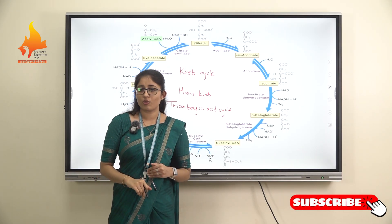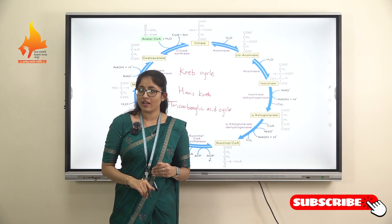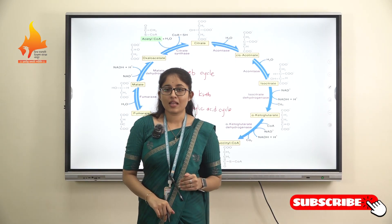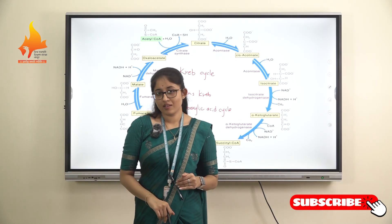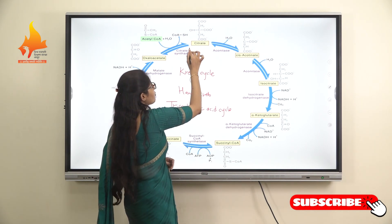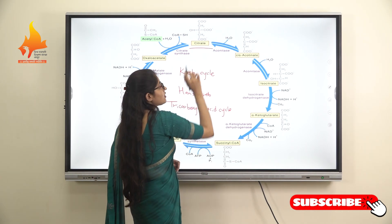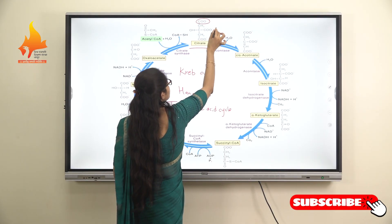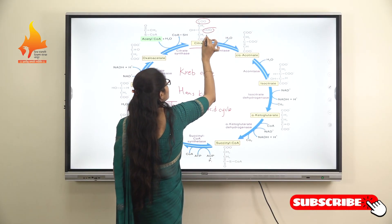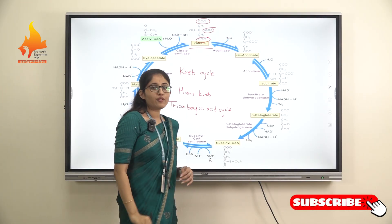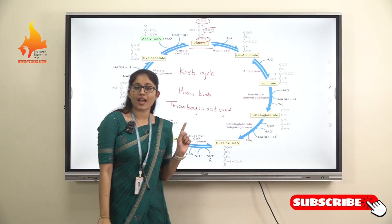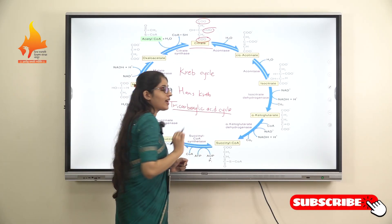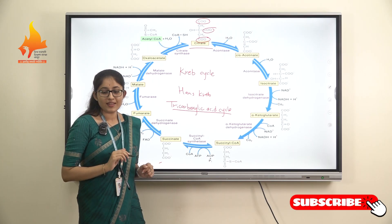Why is it called the tricarboxylic acid cycle? Because of the component which is synthesized in this Krebs cycle — the citrate molecule which is synthesized has three carboxyl groups. Therefore, this cycle is called the tricarboxylic acid cycle.